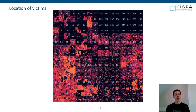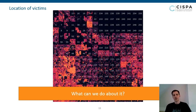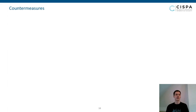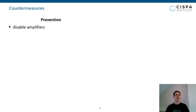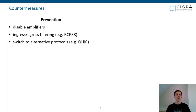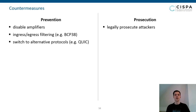The next question is: what can we do about all these attacks? Potential countermeasures fall into two classes. Prevention means contacting people who run servers used as amplifiers and disabling them, implementing better ingress and egress filtering like BCP38, or abandoning UDP in favor of alternative protocols like QUIC that don't allow this in the first place. The other class is prosecution — finding the attackers and punishing them for their deeds.